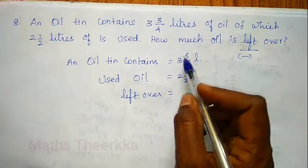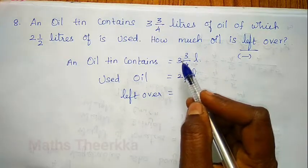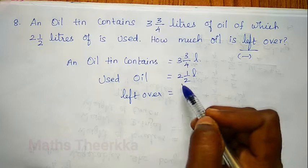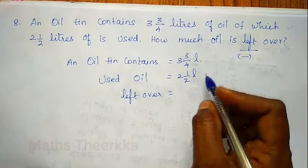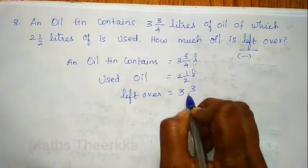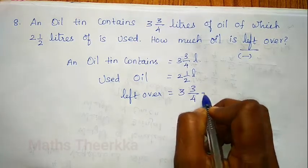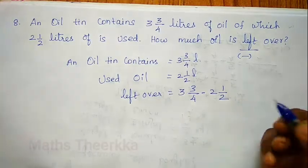The oil tin has a total of 3 and 3/4 liters. The used oil is 2 and 1/2 liters. So we calculate 3 and 3/4 minus 2 and 1/2.